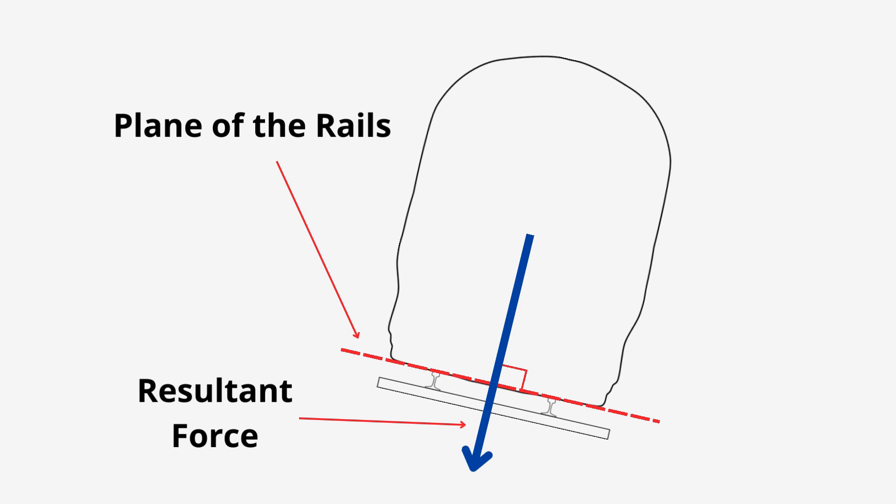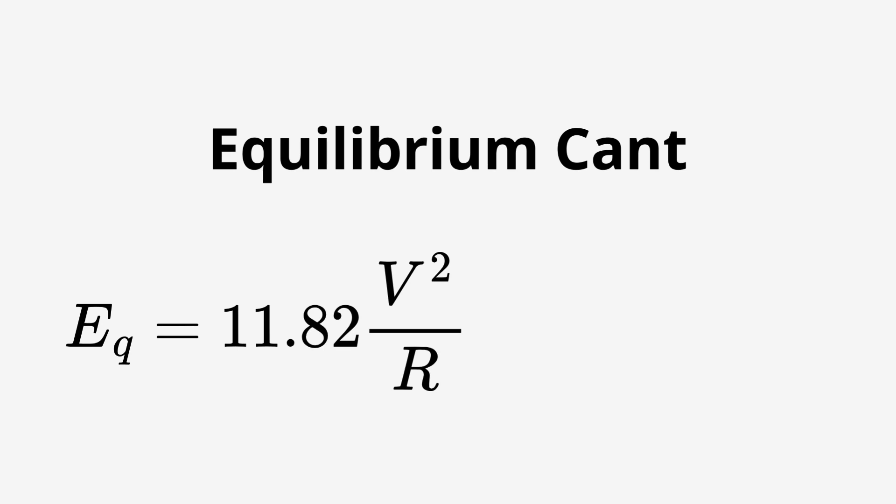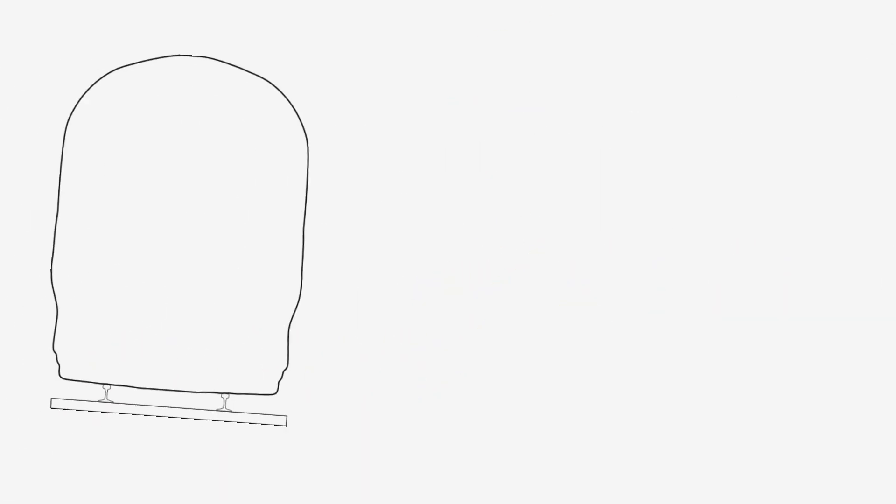A note here, and it is important to remember, this equilibrium cant value calculated is only valid for the speed and curve radius used in this calculation. Change either the speed or the radius values, and the equilibrium cant value changes. But the number, where does it come from? Here we have a train sitting on a flat, straight track.